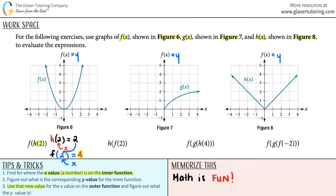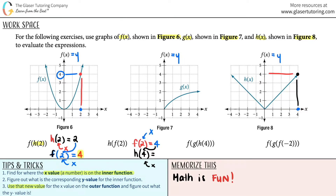We're getting the hang of it — we've got three more examples. Let's go to the next one: h of f of 2. Inner to outer — the inner function is f of 2, and that number is the x value. I go to the f graph, look at where x equals 2, go all the way up — the corresponding y value is 4. Now we go to the outer function, h. I plug in that answer, 4, as my new x value. So h of 4: x equals 4 on the h graph, go all the way up to where it hits the graph. The corresponding y value is 4. That's the answer for the second one.